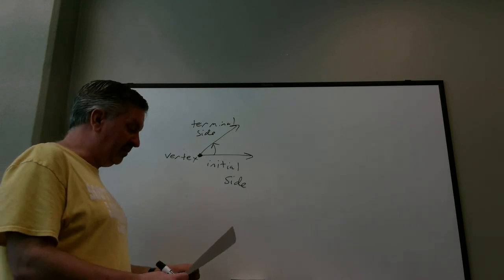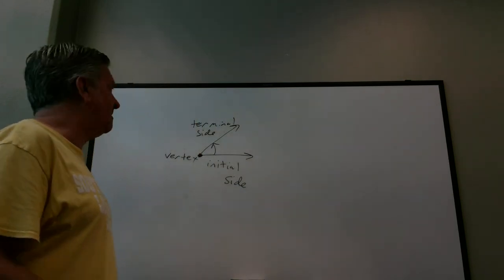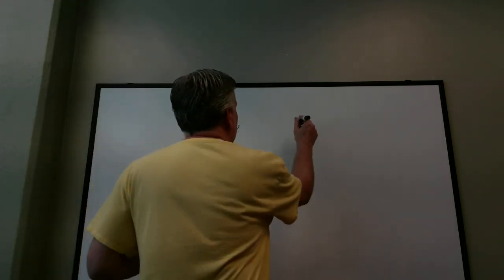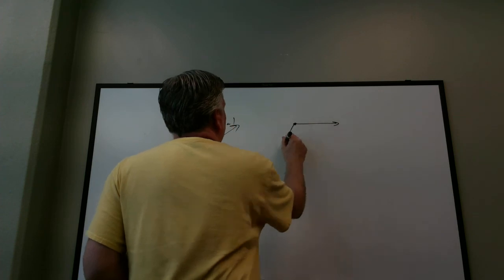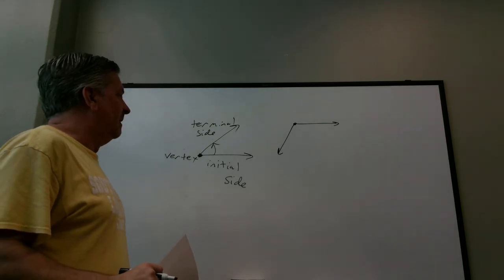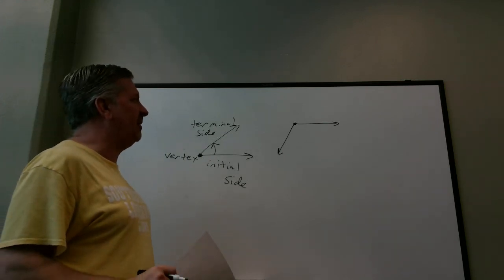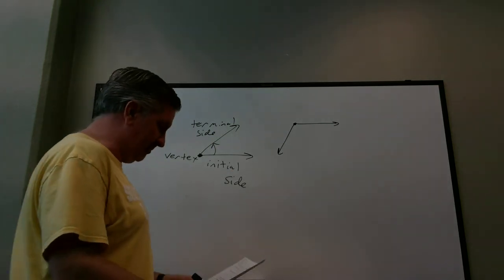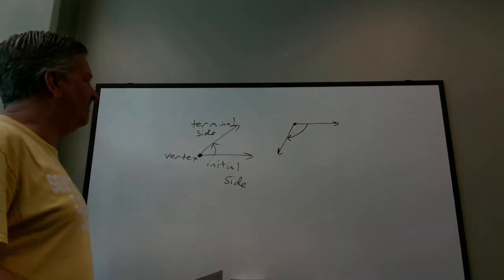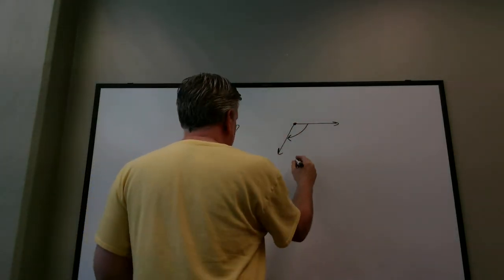If the rotation of the terminal side is counterclockwise compared to the initial side, the angle is positive. If the rotation is clockwise, the angle is negative. Suppose I drew two lines forming a shape — you can't tell if it's positive or negative because I didn't indicate the rotation. Remember, an angle is an initial side, a terminal side, and a rotation. If I indicate a clockwise rotation, this is a negative angle.